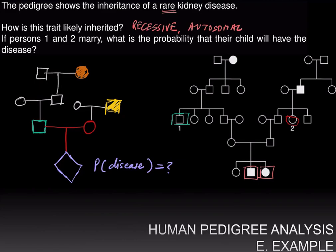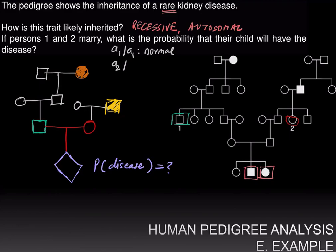However, the grandmother is affected. So the first step in these problems is to write down as many genotypes as possible. In order to do that, we should pick symbols for the dominant and recessive alleles. I'm going to say that A1 over A1 is normal, and A2 over A2 is disease.